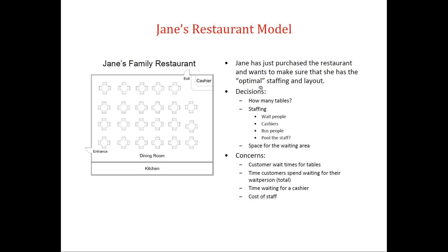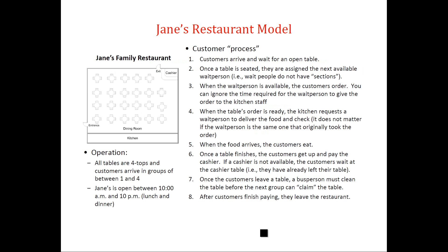The manager of this restaurant has several concerns: customer waiting times for tables, the time customers spend waiting for the wait person overall, time waiting for the cashier at the cash register, and the cost of staff. Basically, they are trying to make decisions about the number of tables and staffing decisions, including the number of wait people, cashiers, and other types of staff. Since our focus in this video is not on developing the model and doing simulation analysis, I'm not going to go over the details of the operation of this restaurant.